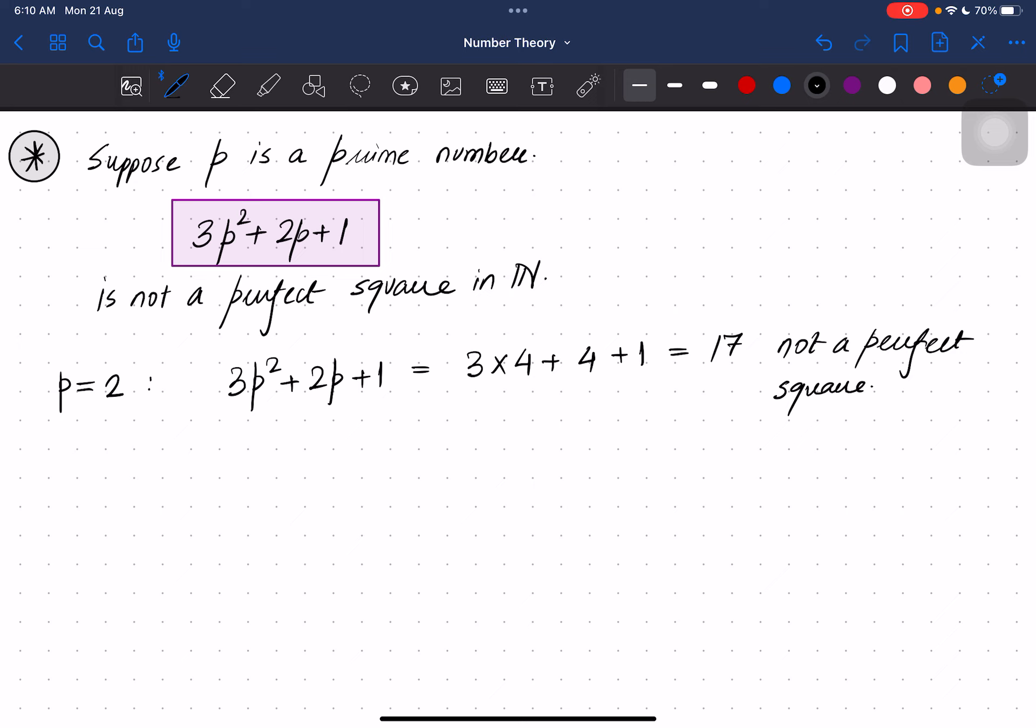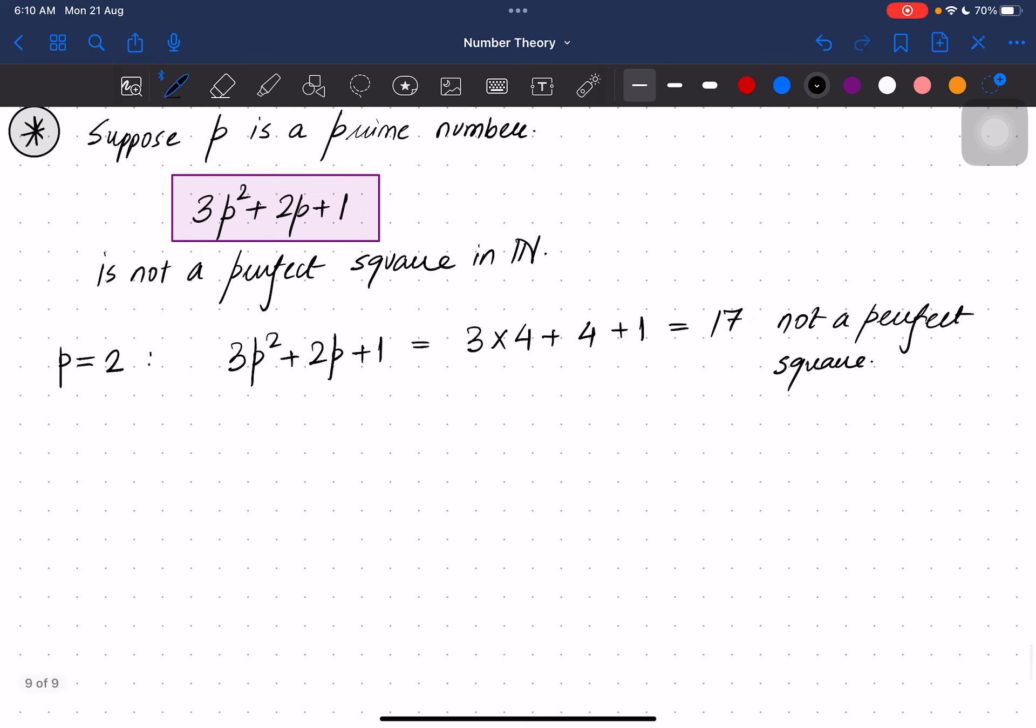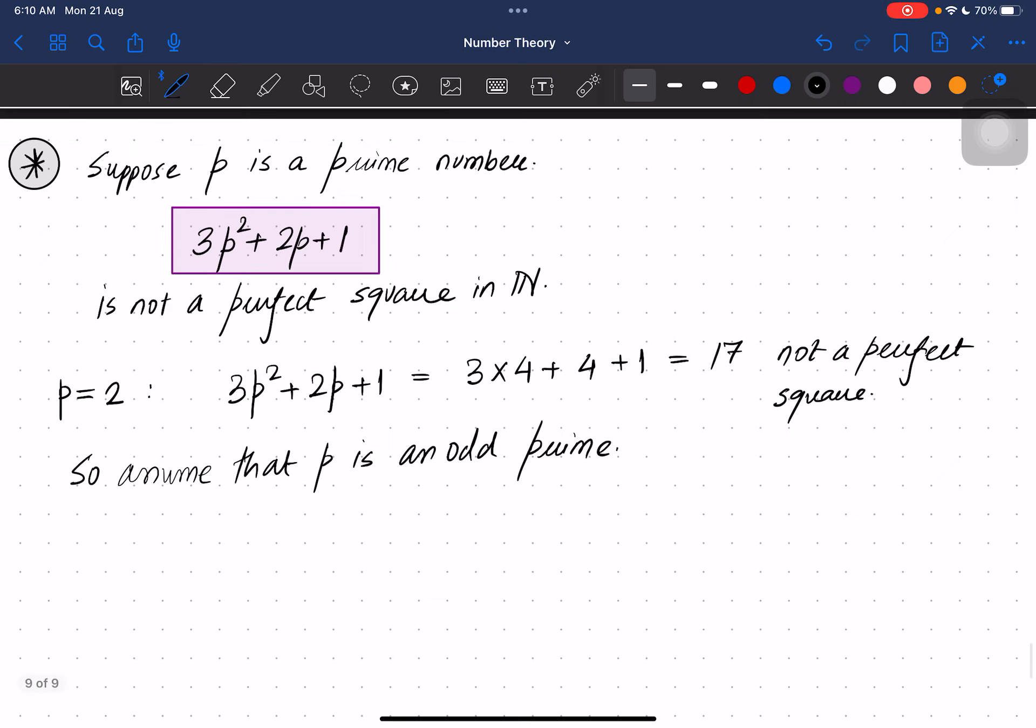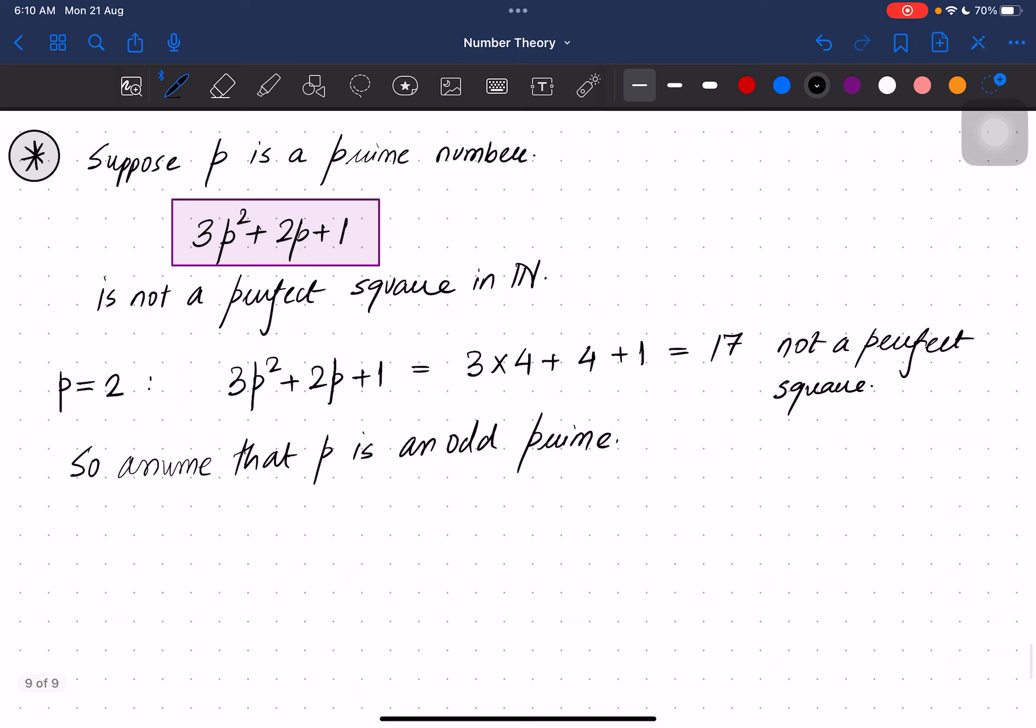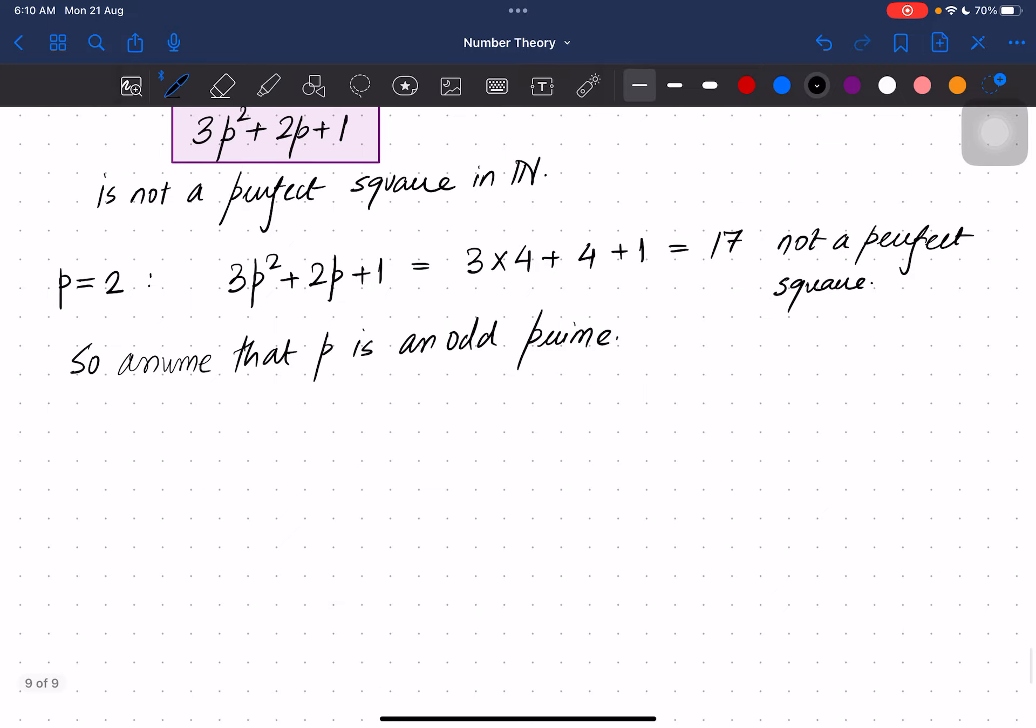We are only left with odd primes. Assume that p is an odd prime. Let us see what happens if p is an odd prime. We will try to prove by contradiction. Suppose this expression 3p² + 2p + 1 is a perfect square when p is an odd prime.